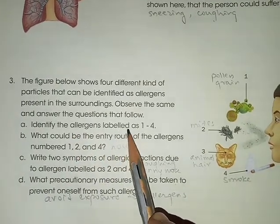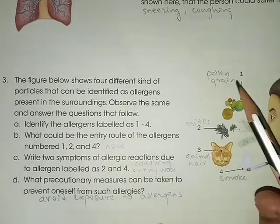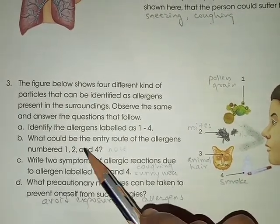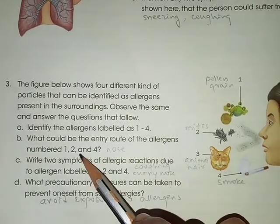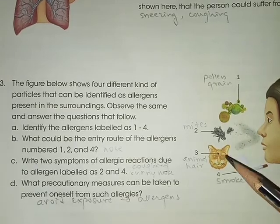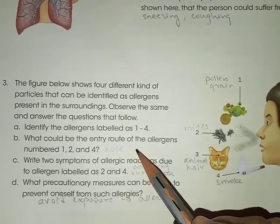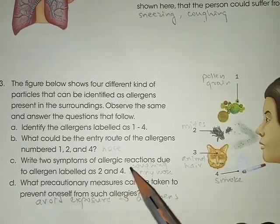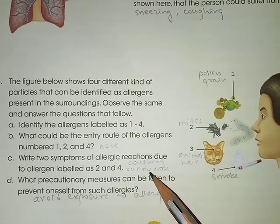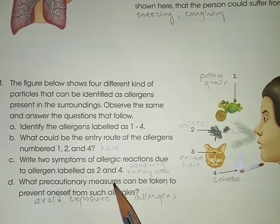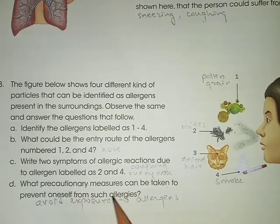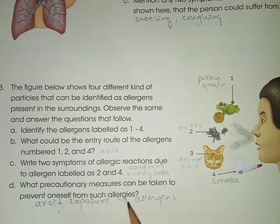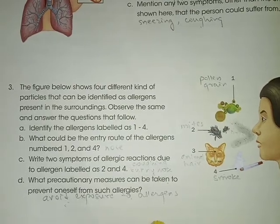Picture study 3. Identify the allergens labeled one, two, three, and four — one: pollen grain, two: mites, three: animal hair, four: smoke. What could be the entry route for allergens one, two, and four? All their entry routes will be the nose. Write two symptoms of allergic reactions due to allergens two and four — coughing and runny nose. What precautionary measures can be taken? Avoid exposure to the allergens.